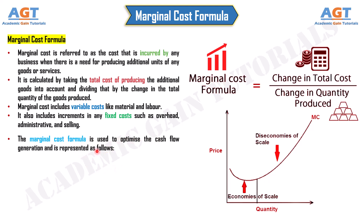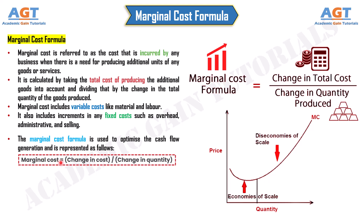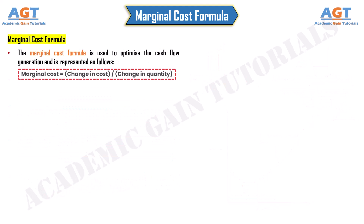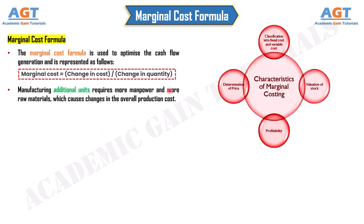The marginal cost formula is used to optimize cash flow generation and is represented as: marginal cost equals change in cost divided by change in quantity. The change in cost refers to the change in the cost of production when there is a need for a change in the volume of production. Manufacturing additional units requires more manpower and more raw materials, which causes changes in the overall production cost.